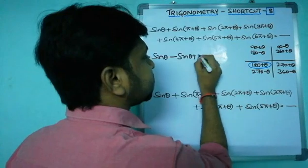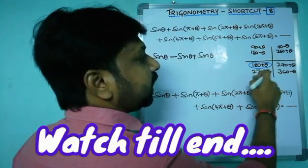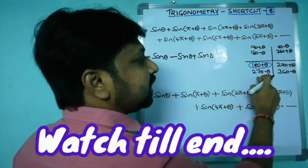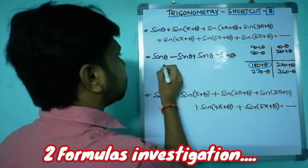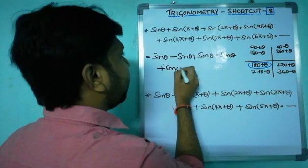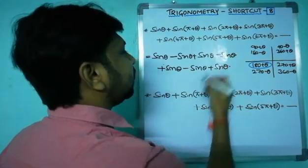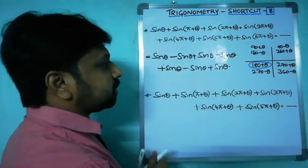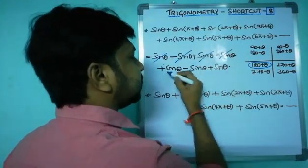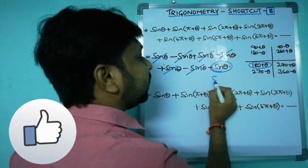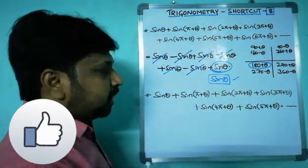sin(3pi plus theta) means 2pi plus pi — adding 2pi puts you back, so it's again the third quadrant, where sin is negative. Then sin(4pi plus theta) is again the first quadrant, giving plus sin theta. Then sin(5pi plus theta) gives minus sin theta, and sin(6pi plus theta) gives plus sin theta. So you get alternating plus and minus sin theta: sin theta minus sin theta cancel, sin theta minus sin theta cancel, sin theta minus sin theta cancel — and sin theta remains.